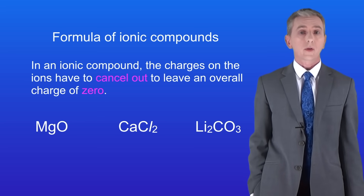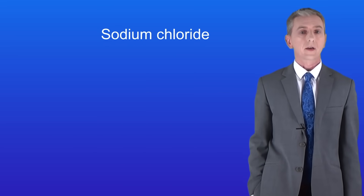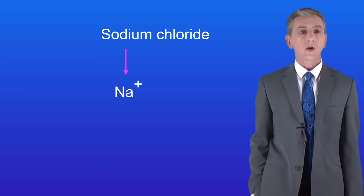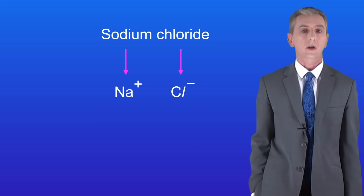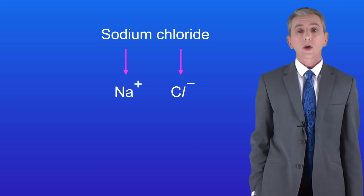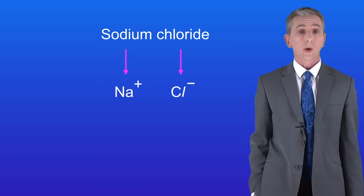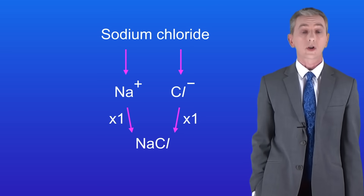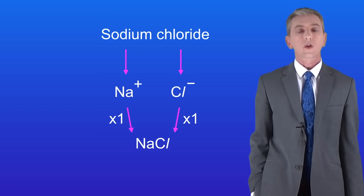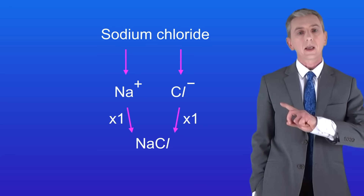We're going to see how to work out the formula of an ionic compound. Let's start with a simple example: sodium chloride. This contains the sodium ion Na+ and the chloride ion Cl-. Don't forget that you'll be given the charges on any ions that you need in an exam question. The sodium ion has a single positive charge and the chloride ion has a single negative charge, so one sodium ion cancels out the charge on one chloride ion. The formula of sodium chloride is NaCl.